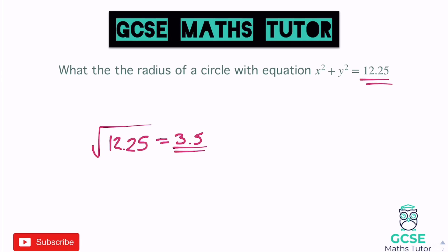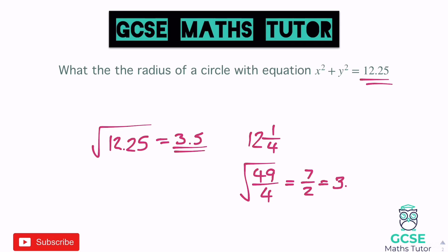If you didn't have a calculator, you'd take a slightly different approach: turn 12.25 into a fraction. 12 times 4 is 48, plus the 1 is 49, so we get 49 over 4. Square rooting that, the square root of 49 is 7 and the square root of 4 is 2, giving us 7 over 2, which converts back to 3.5. So you can use either method, but the majority of the time that will be a calculator-style question.